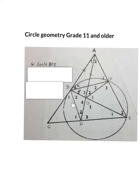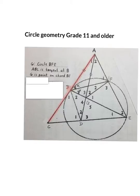Then they said ABC is a tangent at B, so this is a tangent to the circle at B. And they said G is a point on chord BE, that means this is a straight line chord and on it is the G. Then they said BA is equal to GA.